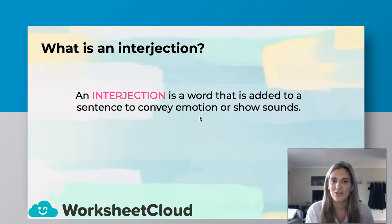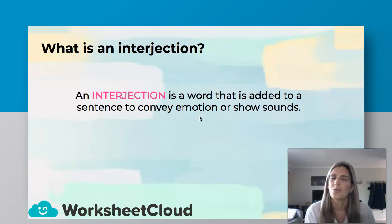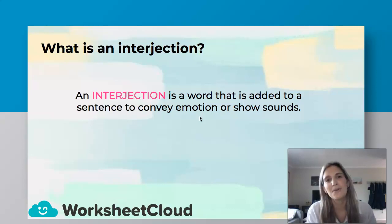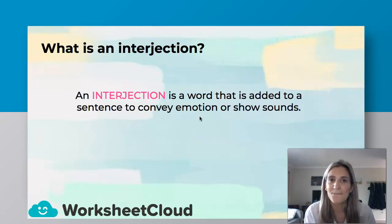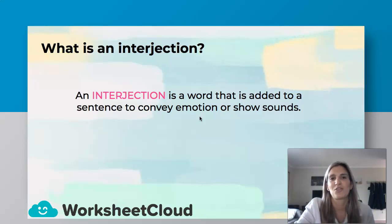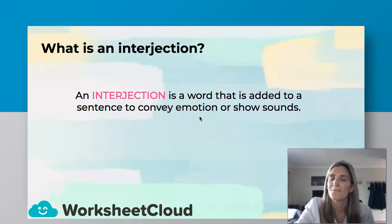So we spoke about the angry emotion. Now let's talk about showing sounds. "Hmm" — think about it. A sound could just show, "Um, your ma'am, I don't know the answer to this question." So interjections can also be sounds we make. Let's get into it.